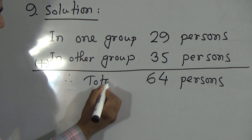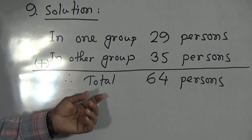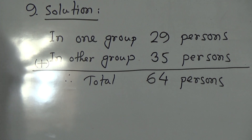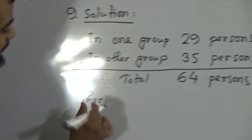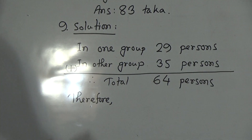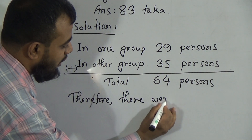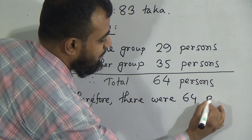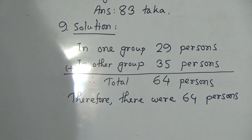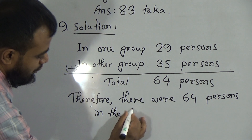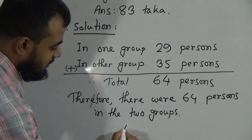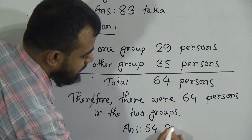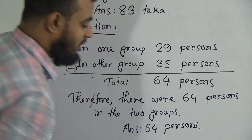Therefore, total 64 persons. But it's a word problem, so we need to write down some words by arranging the language. The question is: how many persons were in the two groups? So we write: Therefore, there were 64 persons in the two groups. And after that, you should write down the answer. The answer is 64 persons. I hope you have understood how to solve it.